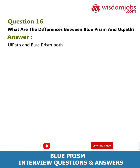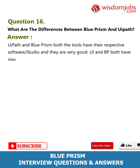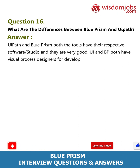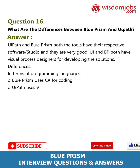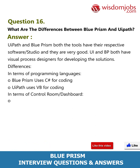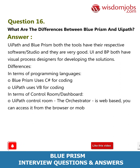Question 16: What are the differences between Blue Prism and UiPath? Answer: UiPath and Blue Prism both have their respective studios and are very capable tools. Both have visual process designers for developing solutions. In terms of programming languages: Blue Prism uses C# for coding; UiPath uses VB for coding. In terms of control room/dashboard: UiPath's orchestrator is web-based and accessible from a browser or mobile, while Blue Prism has client-based servers accessible only through their apps.